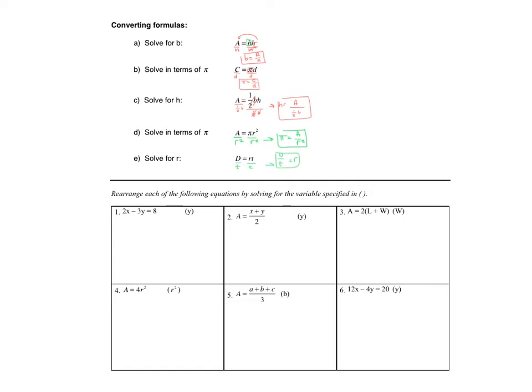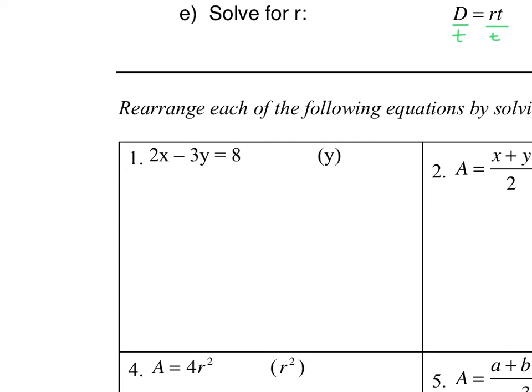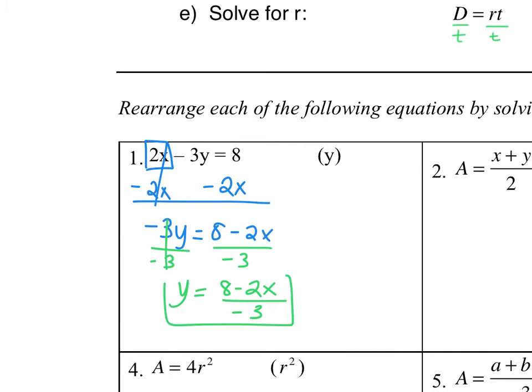Now for the next few examples, we want to rearrange these equations by solving for the variables specified in the parentheses. These are going to be multi-step. So they aren't going to be just like one step like the ones we just did. So in our first example, we have 2x minus 3y equals 8. And we want to solve for y. So basically, we want to get everything on the side of our equation. So say it with me, 2x minus 3y equals 8. So I have a 2x over here that I want to get rid of. The only way to get rid of that 2x is to subtract by 2x. I'm going to subtract by 2x on both sides of my equation. My 2x's cancel. And I'm left with negative 3y equals 8 minus 2x. Well, the negative 3 is being multiplied to my y. So the only way to get rid of my multiplied by negative 3 is to divide by negative 3. So my final answer is y equals 8 minus 2x over negative 3. That's your final answer.